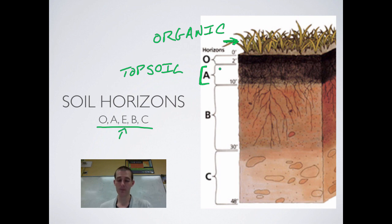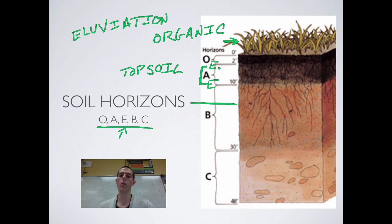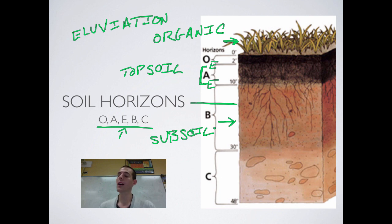Next you have zone E. The E zone can occur between O and A, or between A and B, but it is always going to be above layer B. Horizon E is known as the layer of eluviation — also known as the zone of leaching — where minerals and nutrients in the soil get washed out. As water percolates down through the soil, it takes the minerals and nutrients out of zone E and deposits them into zone B. Zone B is known as subsoil, and this area contains most of the nutrients — minerals like potassium and nitrogen — but does not contain much or any organic material. The last one is zone C, which is your parent material, whatever rock is contained there. Those are your soil horizons.